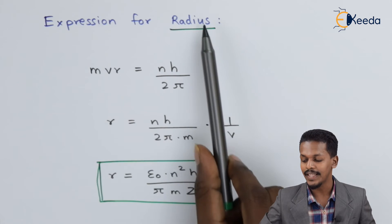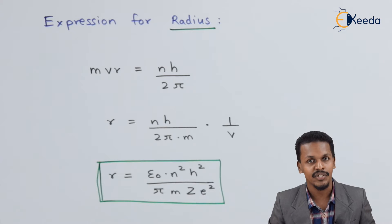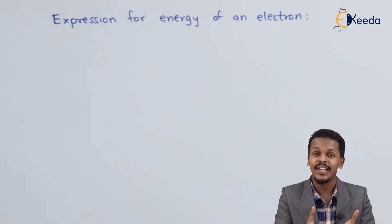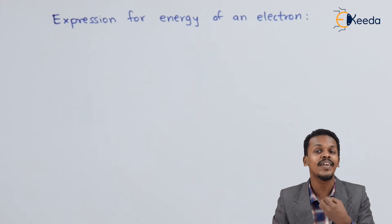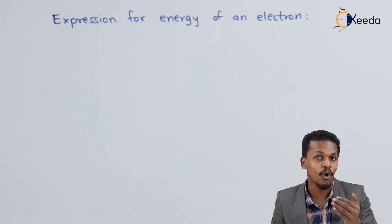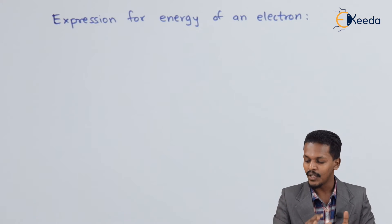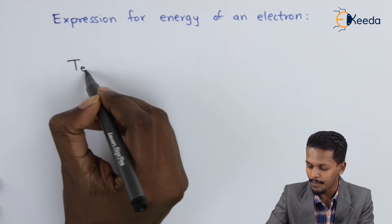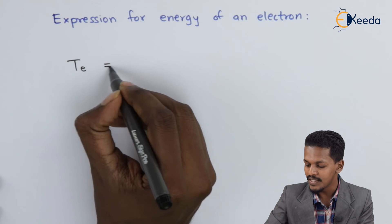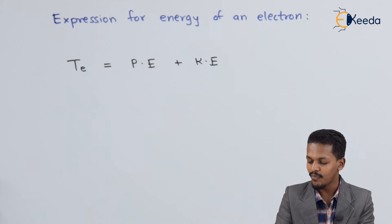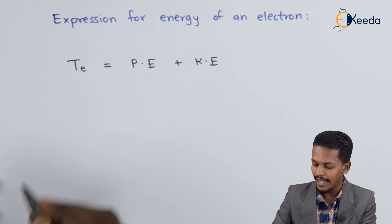Now let us discuss the expression for the energy of an electron. We need to know the energy of the electron in order to provide sufficient energy to excite it from one energy level to another, allowing it to jump from a lower orbit to a higher specific orbit. The total energy TE is the sum of potential energy plus kinetic energy. Let us name the total energy of the electron as E.